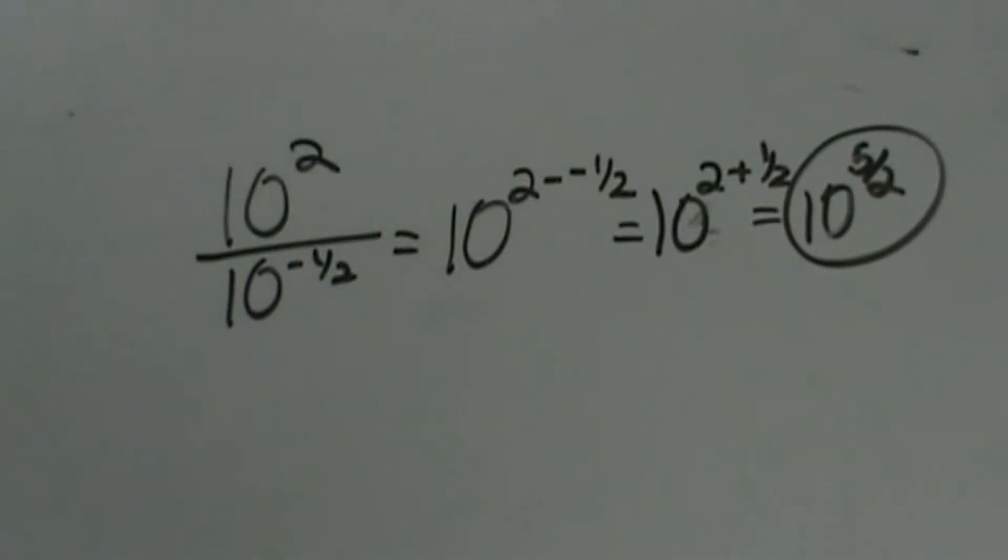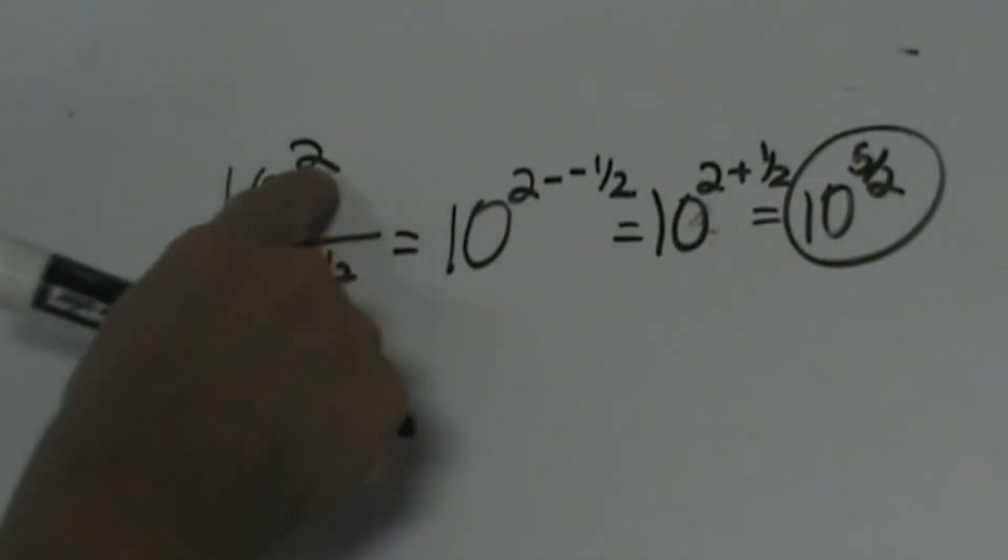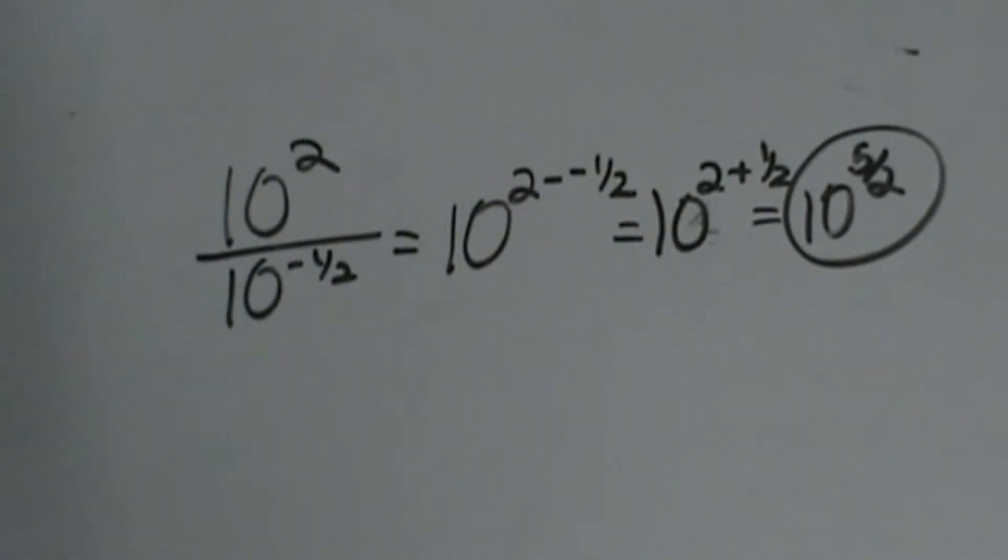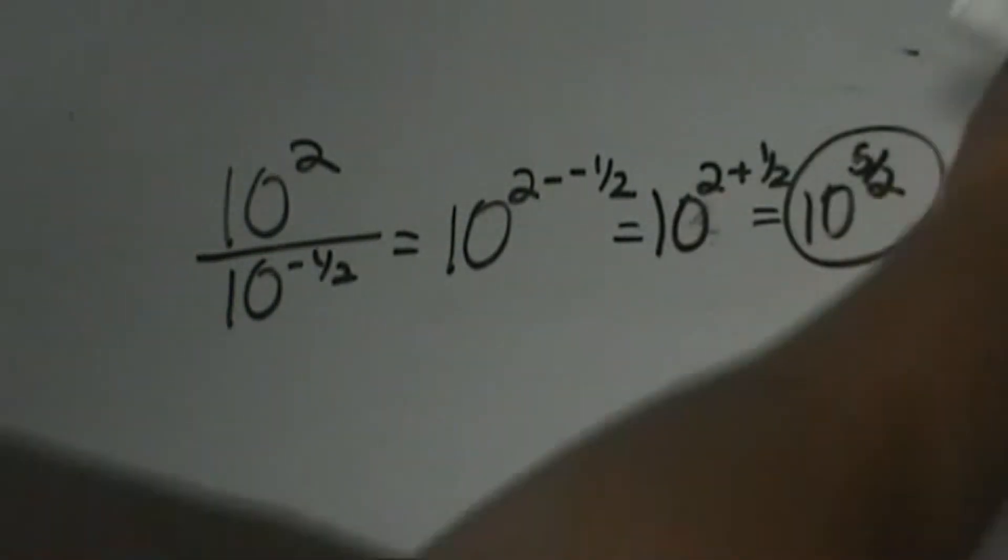So we're still going to subtract the exponents, but remember you're subtracting a negative, which adds to a positive. Those are kind of all the different types of problems. The only other thing would be simplifying maybe a 5th root or 4th root that comes up in a problem. So let's just throw one or two up here. Let's say you're looking for the 4th root and you have this fraction.